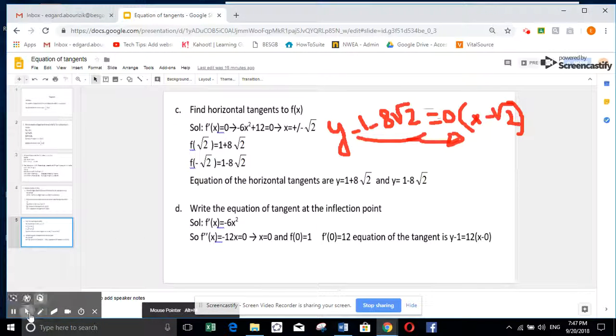To finish from the tangent, the last example, write the equation of the tangent at the inflection point. The question is, we need to know how to get an inflection point. You all know inflection point, it means second derivative is 0.